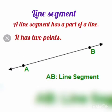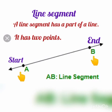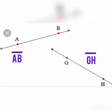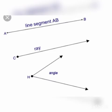Next, a line segment. A line segment is a part of a line. It has two points — a starting point and an ending point. Unlike a line, a line segment does not extend beyond its two endpoints.